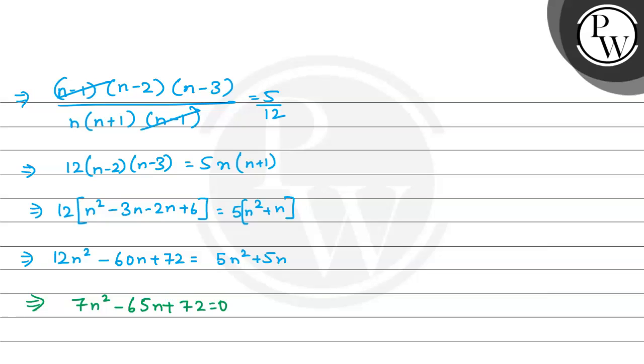Now, 72 multiplied by 7, let's make the factors. The factors will be 7n square minus 56n minus 9n plus 72 equals 0. Now, using factorization method, 7n common taken out gives 7n times n minus 8, minus 9 common taken gives n minus 8 equals 0.